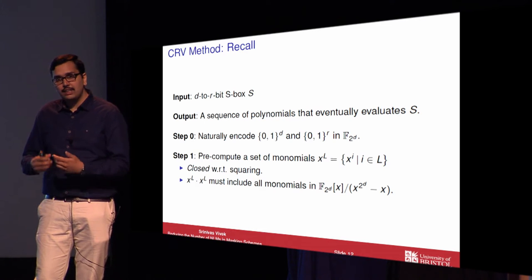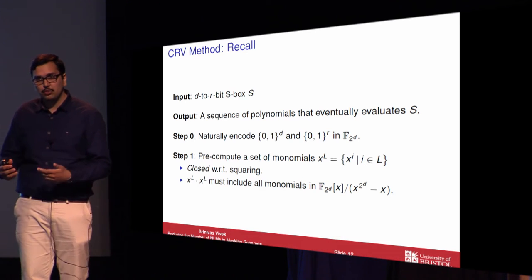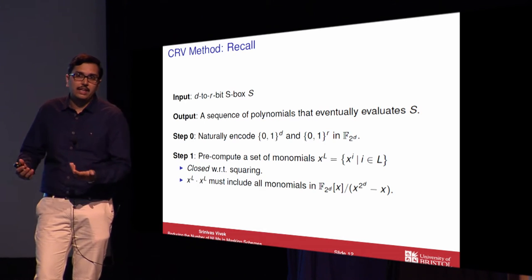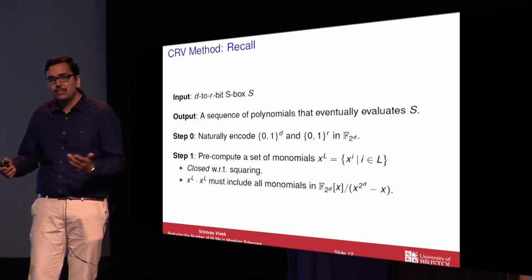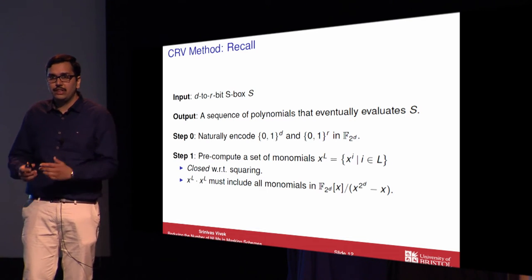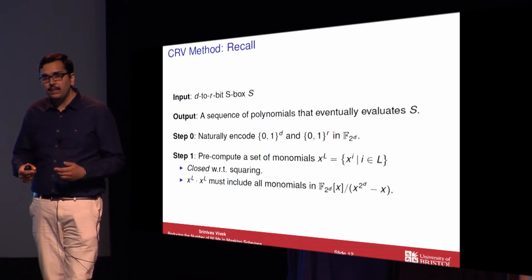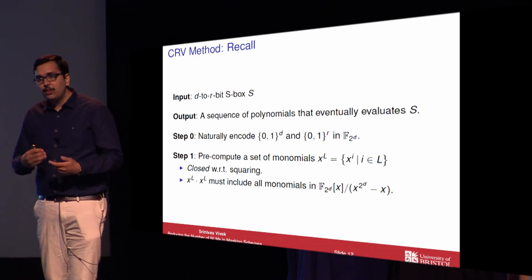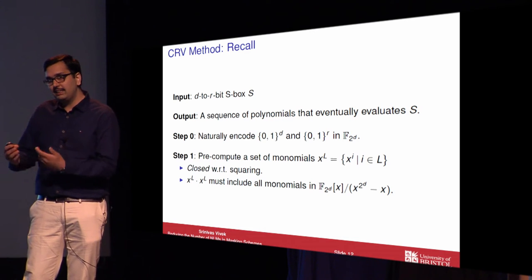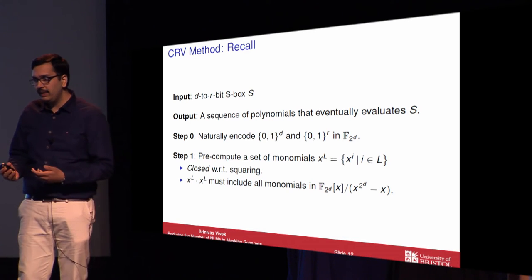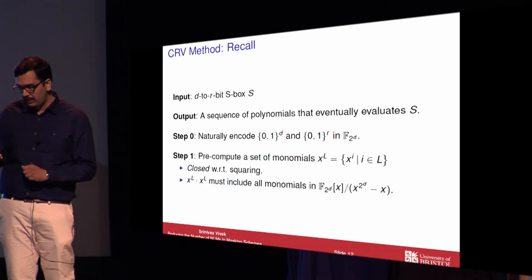We require that this set is closed with respect to squaring, because squaring is a free operation, and we would like to have this pre-computed set as large as possible. It must also satisfy the property that we should be able to produce any monomial of degree at most less than 2 power D by multiplying some two monomials from this pre-computed set.